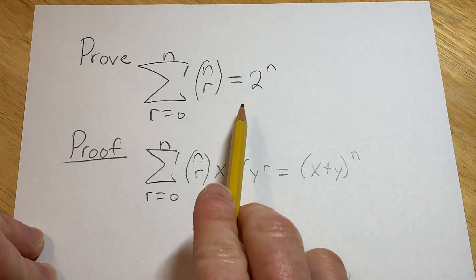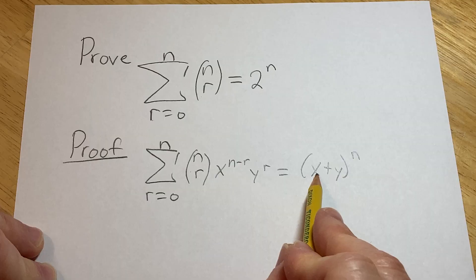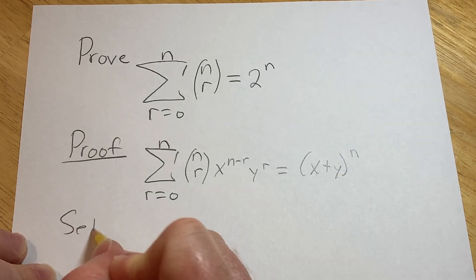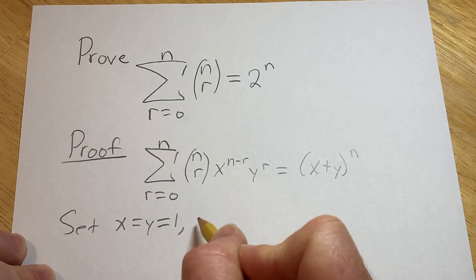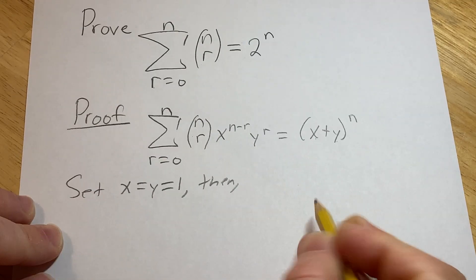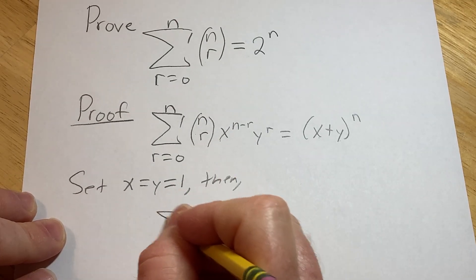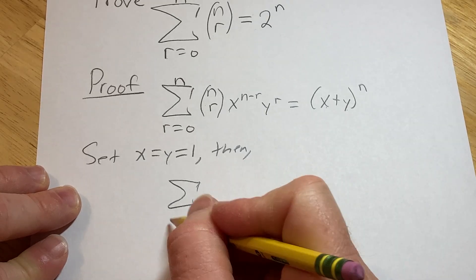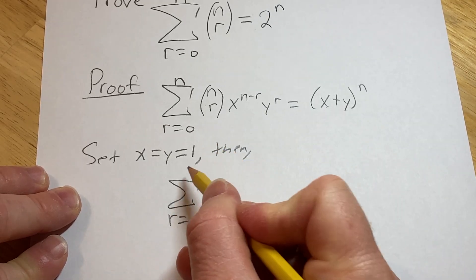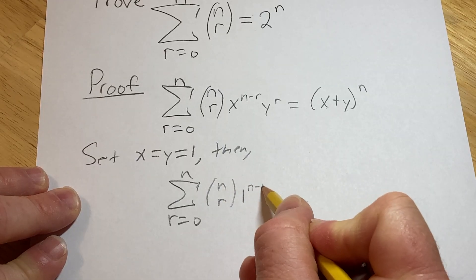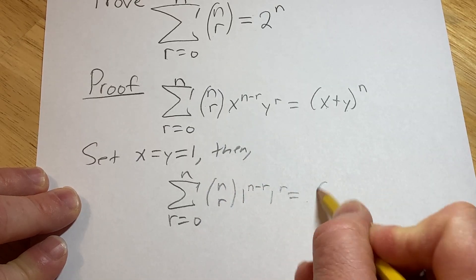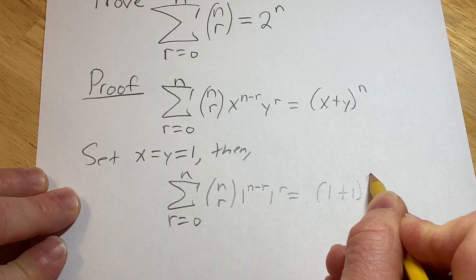So basically we want to get a 2. So if we set x and y equal to 1, then what do we have? We have the finite sum as r runs from 0 to n of n choose r, 1 to the n minus r, 1 to the r equals 1 plus 1 to the n.